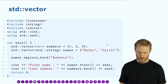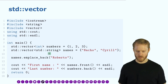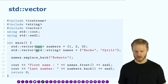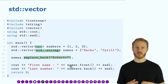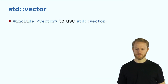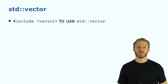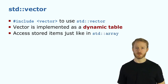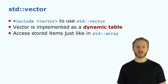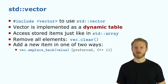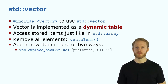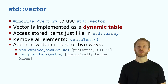At runtime, we can then add elements. To use vectors, we add the `<vector>` header. It's implemented as a dynamic table — the same as an array, but the size can change at runtime. We can use `clear`, `size`, and the same functions. To add new values, the preferred way is `emplace_back`, though `push_back` also exists since it was used before.